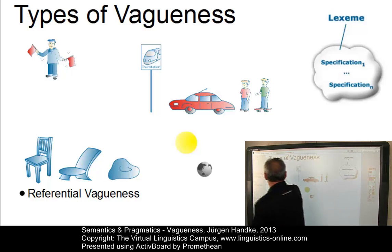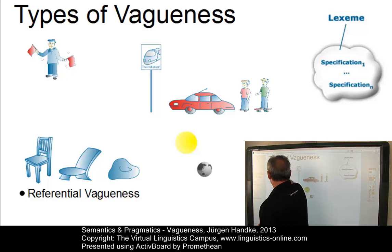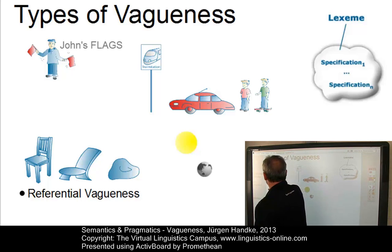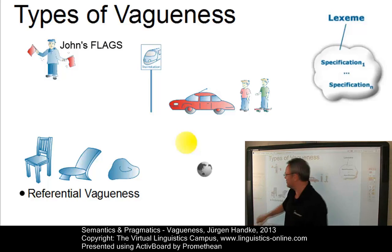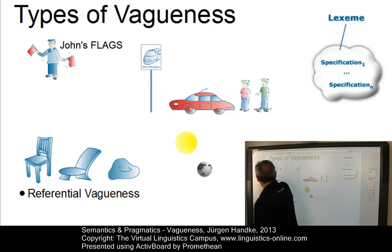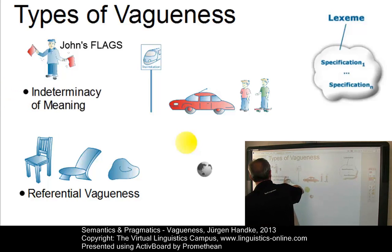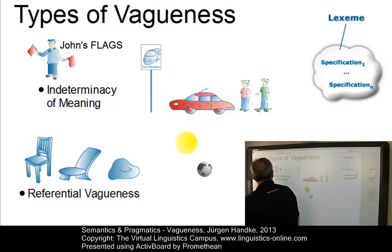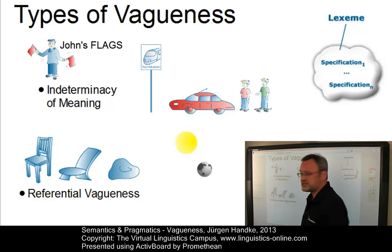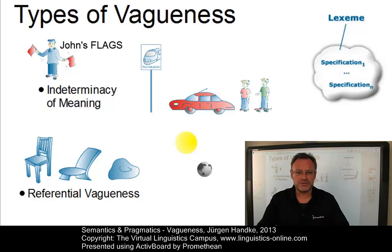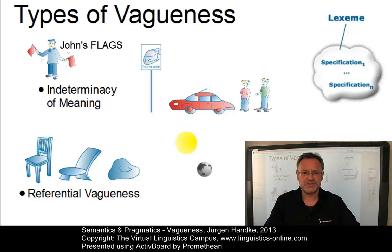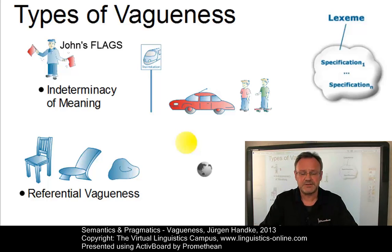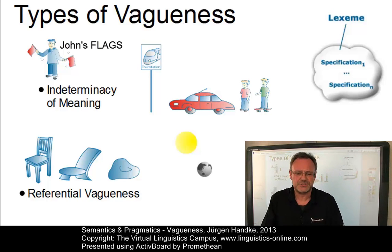Take this example here, where we could say 'these are John's flags.' This is called the indeterminacy of meaning. Does John own these flags? Has he created these flags? Well, indeterminacy of meaning.